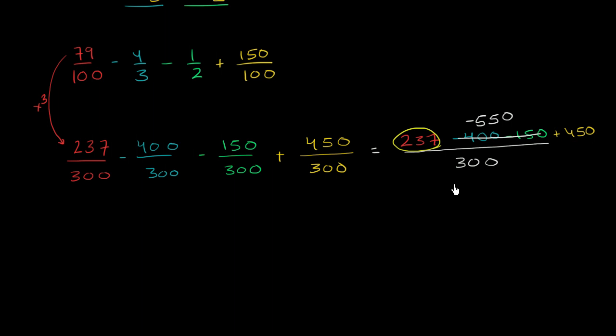Or actually, maybe another easier way to think about this is negative 550 plus 450 is going to get us negative 100. And so this simplifies things a good bit. Now we have 237 minus 100 is going to be 137.